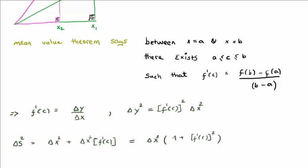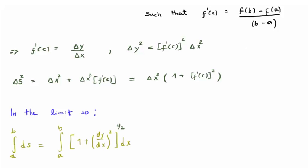So plugging this expression for Δy² into our formula for Δs², we see that Δs² = Δx² × (1 + [f'(c)]²). Of course we can take the limit as Δx approaches 0 and we get dx and ds, which of course we can integrate to get the circumference of our circle, or the length of the circumference of our circle.